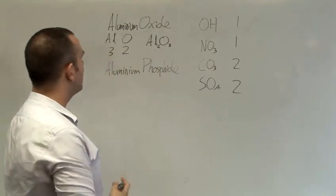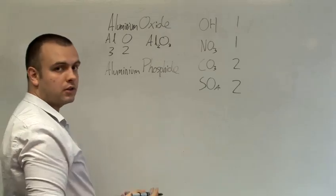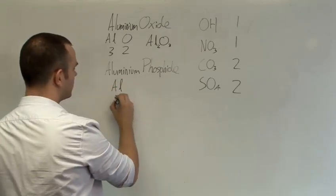Where possible, you can cancel. For example, aluminium phosphate. Aluminium, as we've just seen, has a valency of 3.